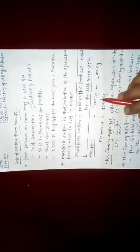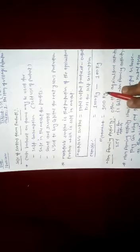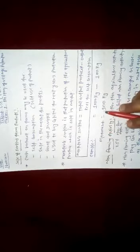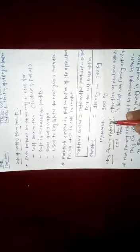For example, if a farmer grows 1000 kg of wheat as total output, and 100 kg is self-consumed by the farmer and their family, then the market surplus is 1000 kg minus 100 kg, which equals 900 kg. That 900 kg is the market surplus.